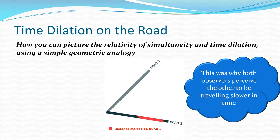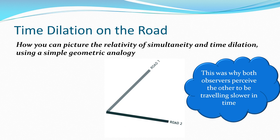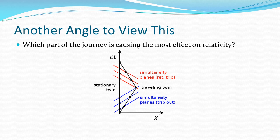This brings us back to the scenario of two different paths — the traveling twin and the stationary twin back on Earth — and hence they're not measuring things the same way. This is why both observers appear to the other one to be traveling at a different time. The traveling twin has a point where they change their velocity, and that changes how simultaneity matches up between the two frames of reference.